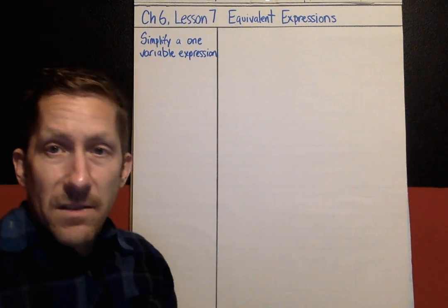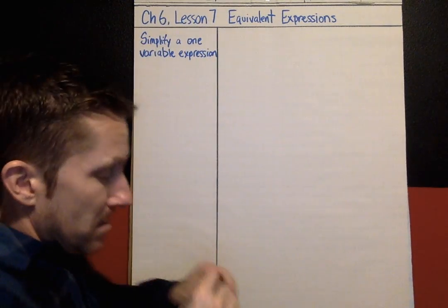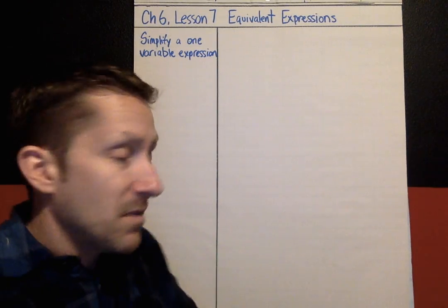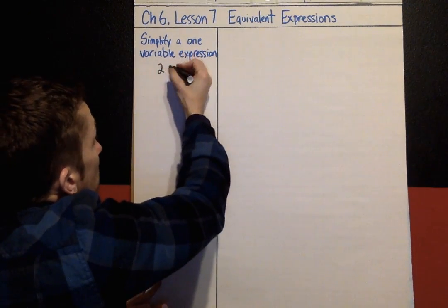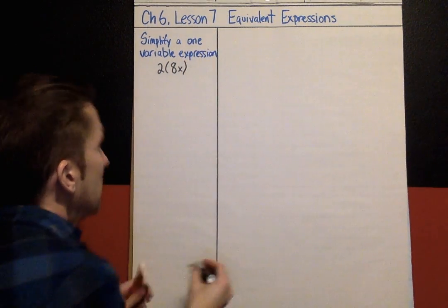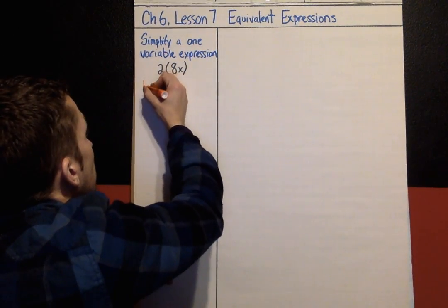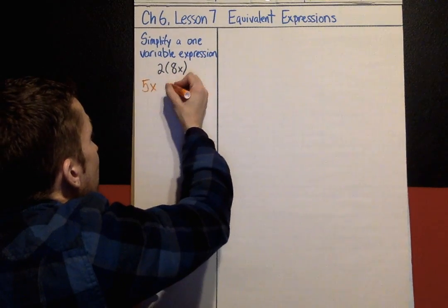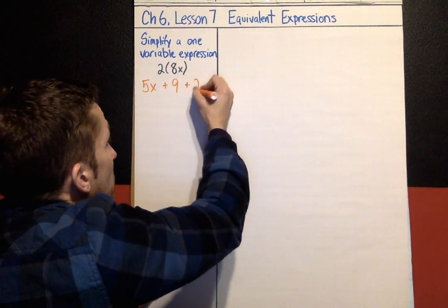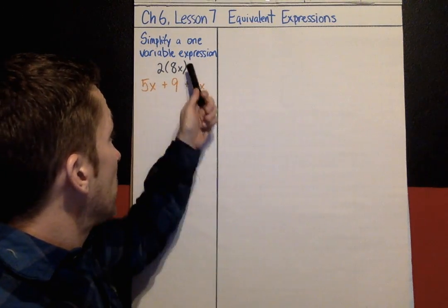These expressions are only going to have a single variable. I've got two examples. The first one is 2 times 8x, and the second expression is 5x plus 9 plus 2x. We are going to simplify these two expressions.